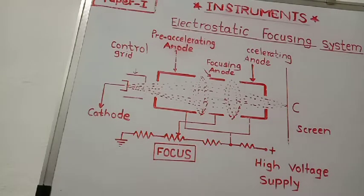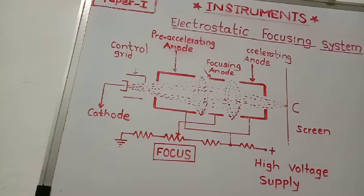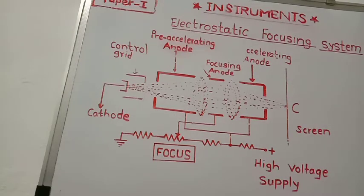Hello students, today we will study about the electrostatic focusing system in CRT, that is in the cathode ray tube used in an oscilloscope.